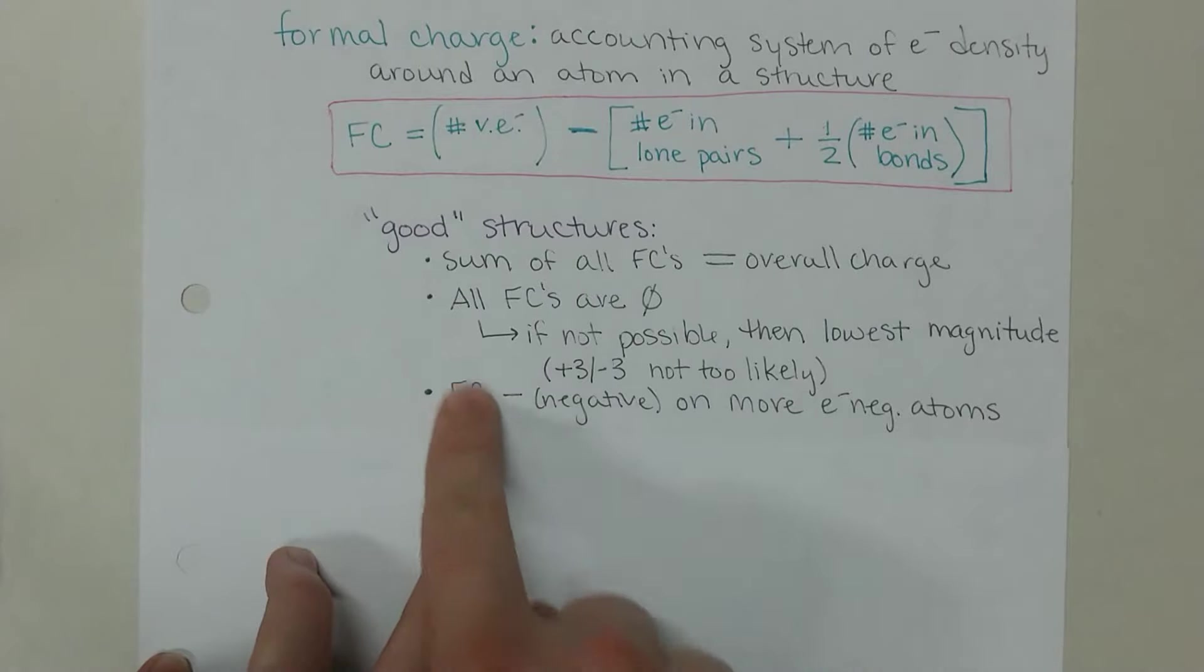The last thing in our good structures is any formal charge that is negative. Any atoms that have a negative formal charge, we would prefer them to be on more electronegative atoms. Oxygen is an atom that likes to have a formal charge of negative. It is okay with that because it's highly electronegative, so it can carry more electrons on the atom to get a formal charge of negative.